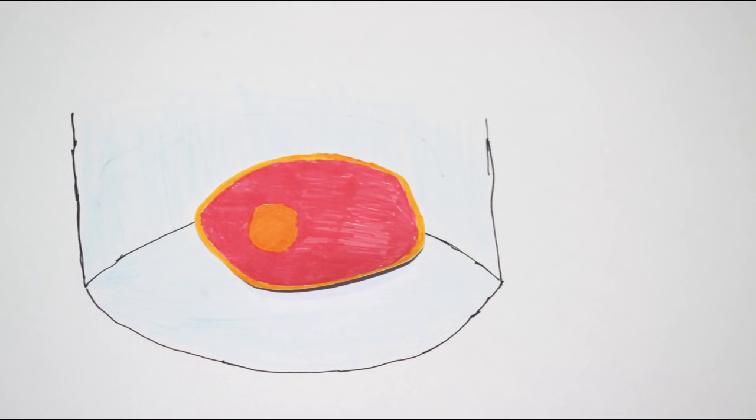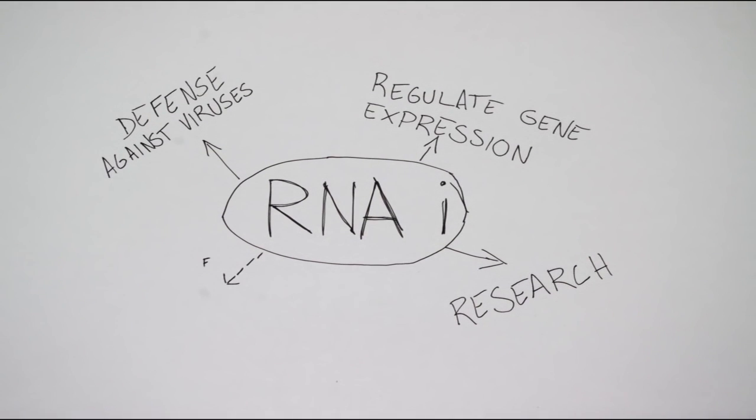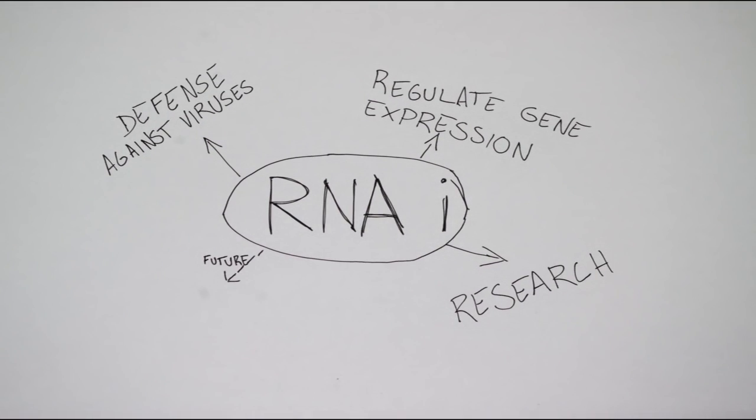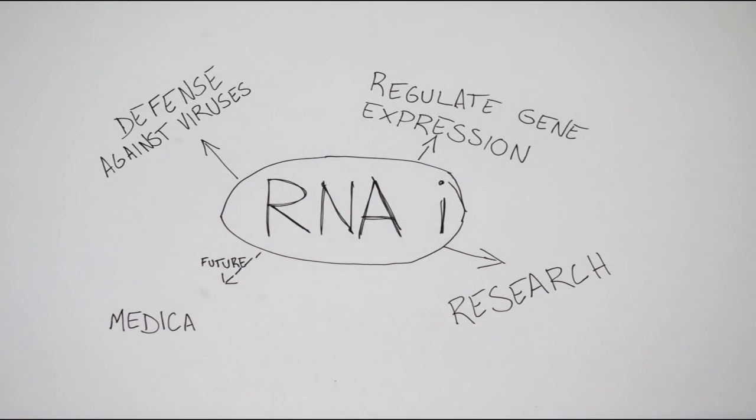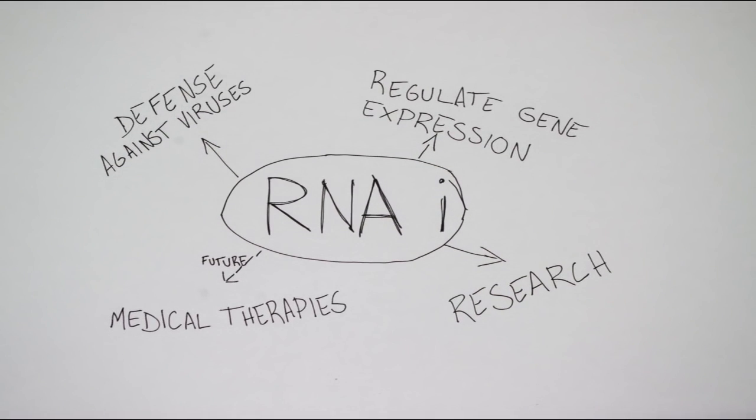In this example, we could conclude that the gene we blocked is responsible for that nice pink color. It is also possible that, in the future, some new medical therapies based on this concept will appear. Some diseases related to malfunctioning genes could potentially be treated by gene silencing.